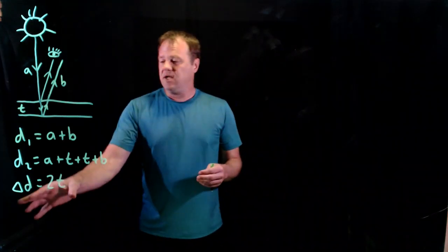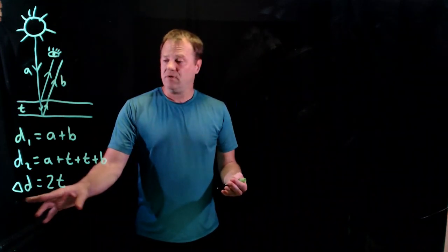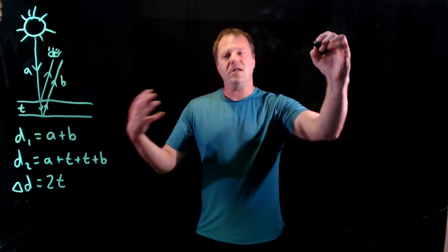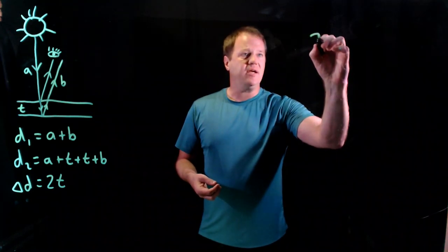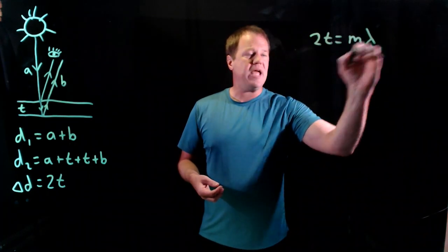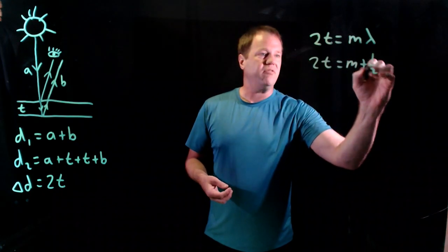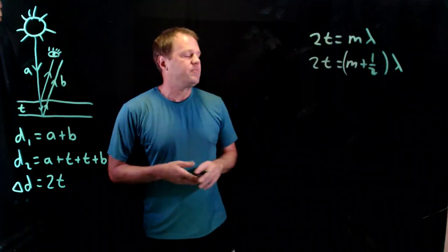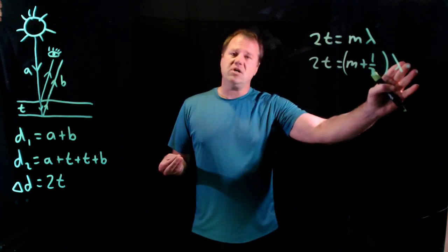So we can replace ΔD in the usual formulas for constructive and destructive interference with 2T. So let's do that. So we would normally have ΔD equals M lambda and ΔD equals M plus one half the wavelength. But instead of writing ΔD, we'll write 2T. So 2T equals M lambda and 2T equals M plus one half the wavelength. So lambda is the wavelength of this light. So normally we would associate this formula with constructive interference and this formula with destructive interference.